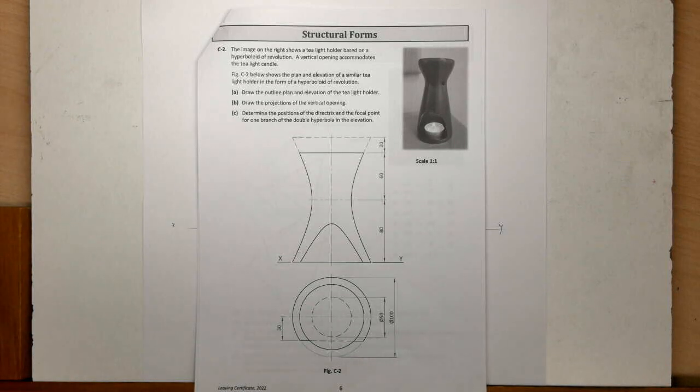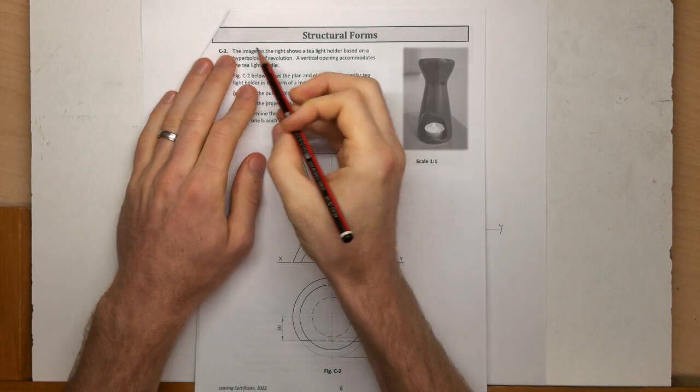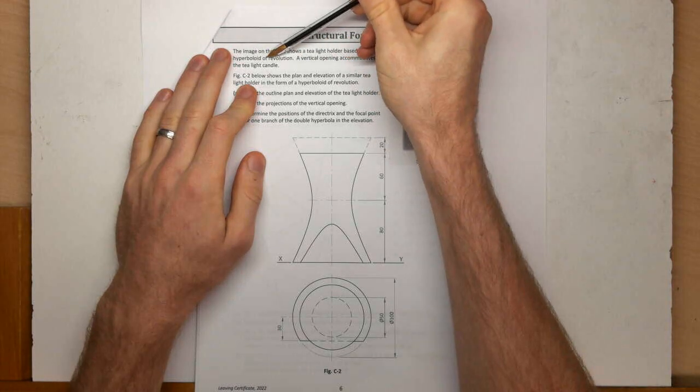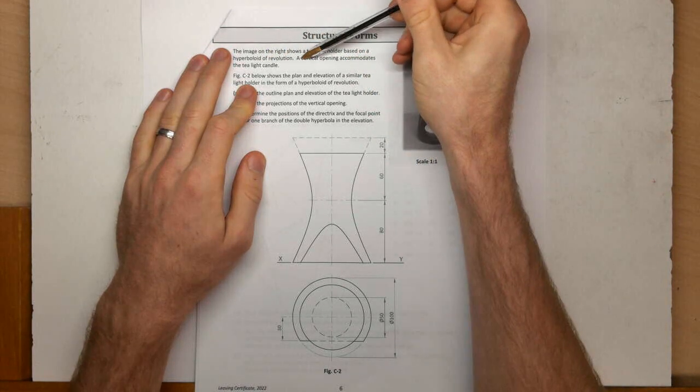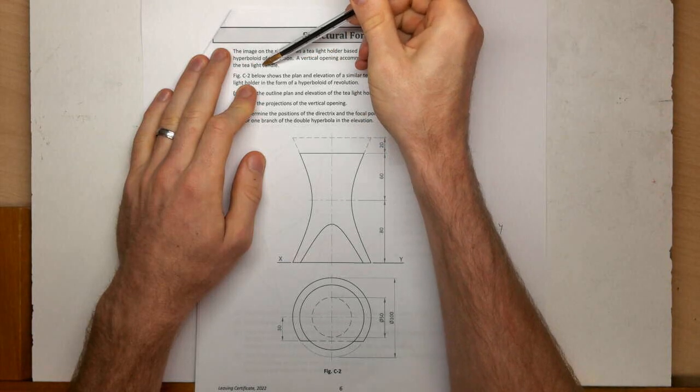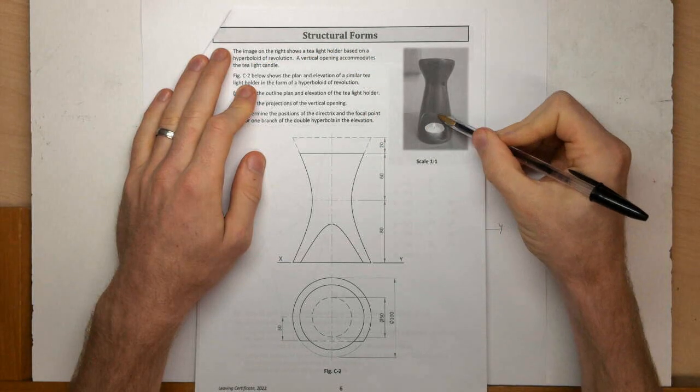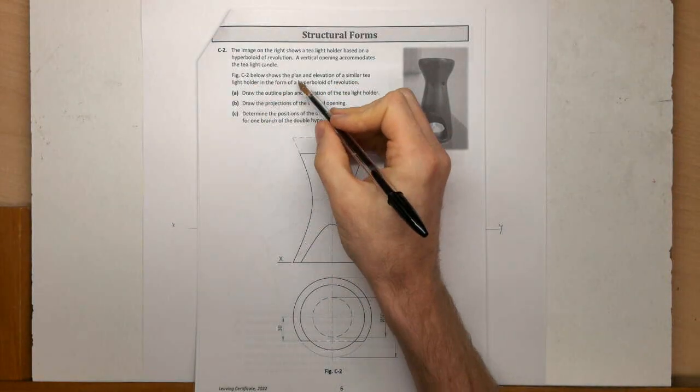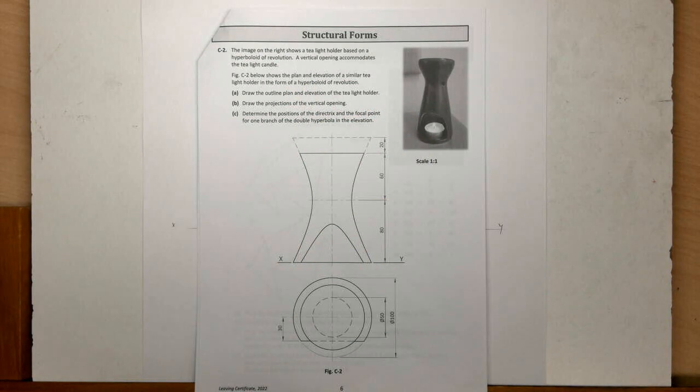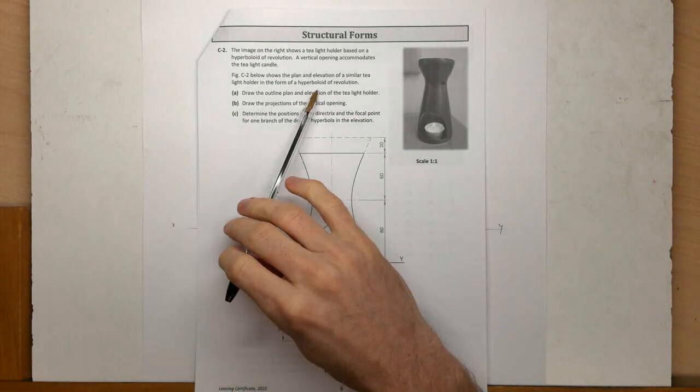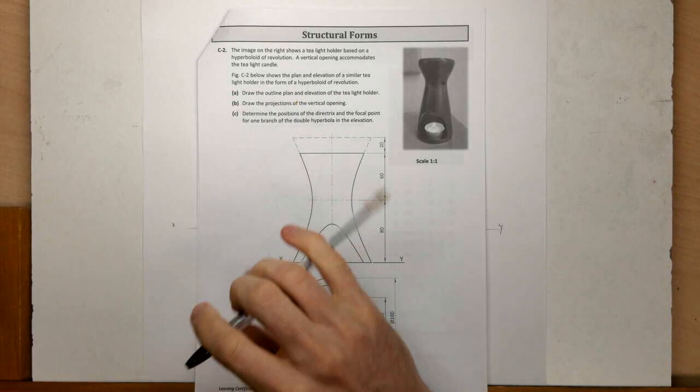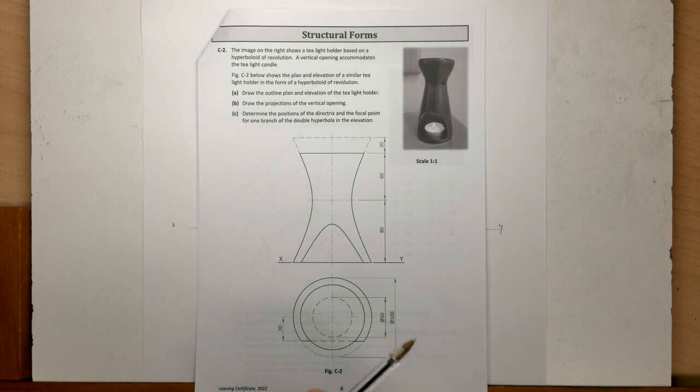Okay, so welcome to 2022 question C2, the structural forms question. The image on the right shows a T-light holder based on a hyperboloid of revolution. A vertical opening accommodates a T-light candle. Figure 2C shows the plan and elevation of a similar light holder in the form of a hyperboloid of revolution. Part A is draw the outline plan and elevation of a T-light holder.